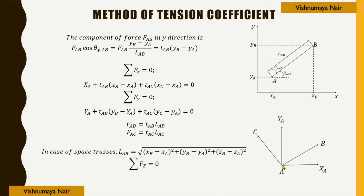Considering equilibrium of forces along the y direction, summation Fy = 0: YA + tab·(yb−ya) + tac·(yc−ya) = 0.